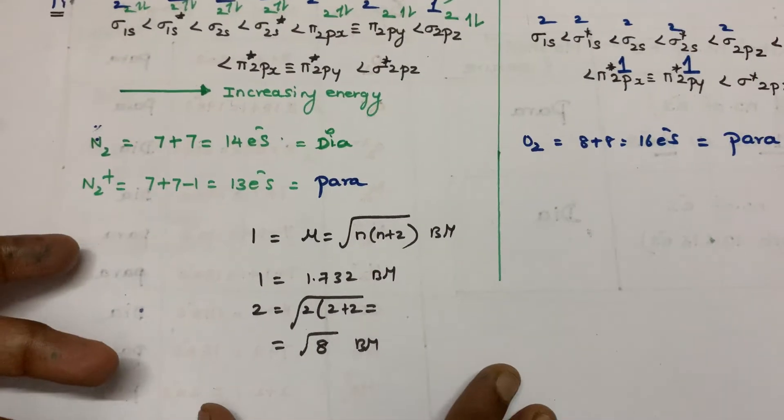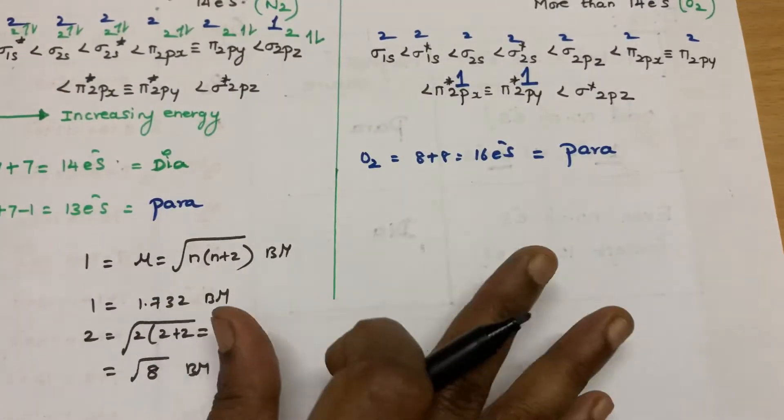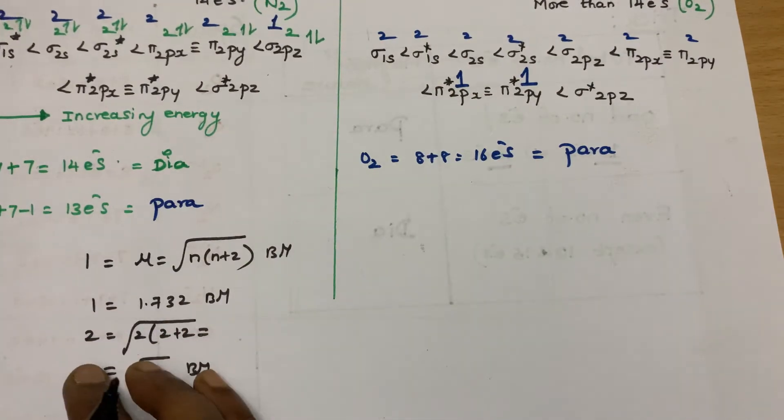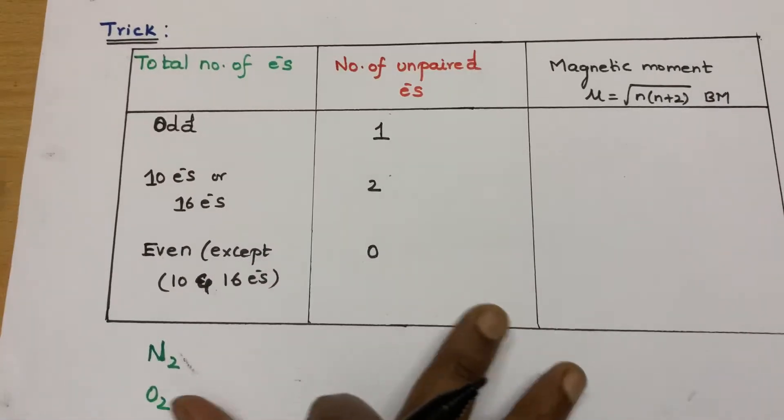So how many unpaired electrons you will find out? This is the method we normally follow. But if we don't have time, you will not be having enough time to calculate all these things. So I am going to tell you the trick.